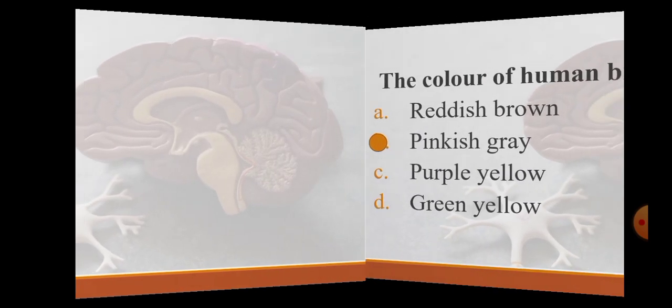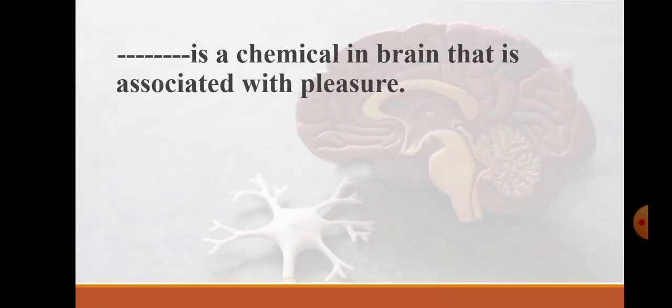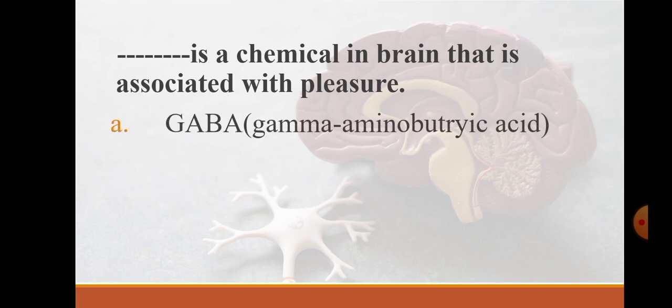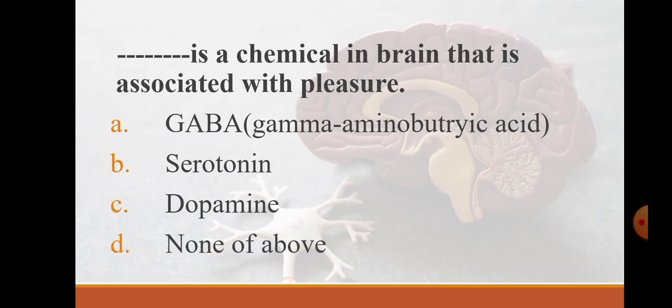What chemical in brain is associated with pleasure? GABA, gamma-aminobutyric acid, serotonin, dopamine, or none of above. The correct answer is dopamine. Dopamine is a neurotransmitter in the brain that is associated with pleasure. Dopamine also plays a role in body movement and function such as motivation.